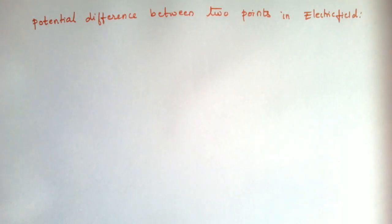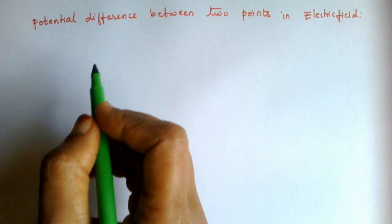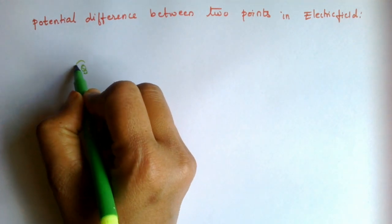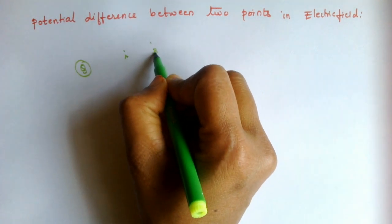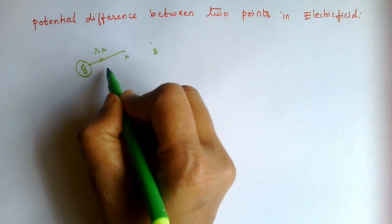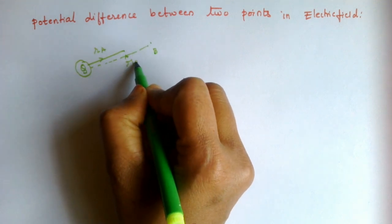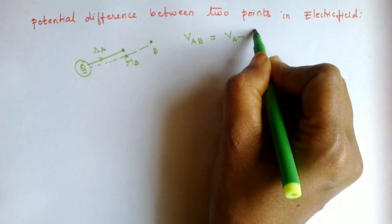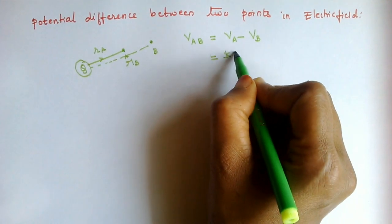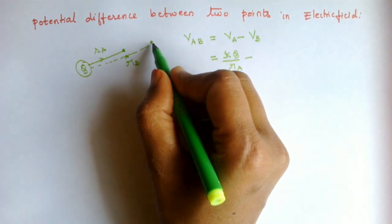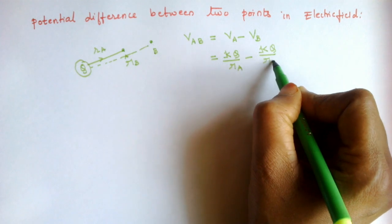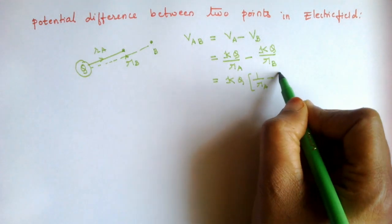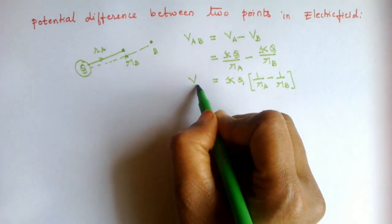Now let us find the potential difference between two points in an electric field. Say we have a positive source charge with point A at distance rA and point B at distance rB. The potential difference VAB = VA − VB = kQ/rA − kQ/rB = (1/4πε₀) × (1/rA − 1/rB). This gives the potential difference between points A and B within the electrostatic field.